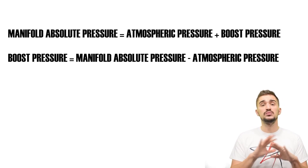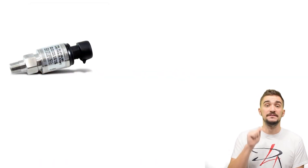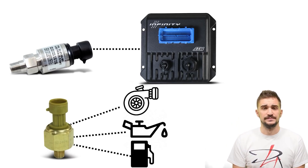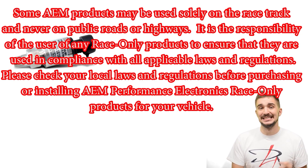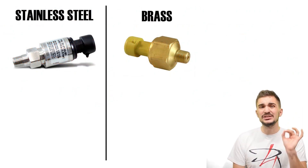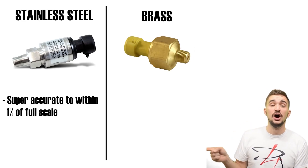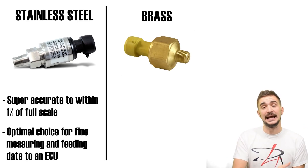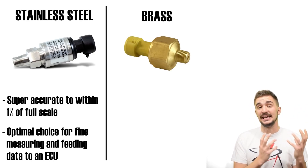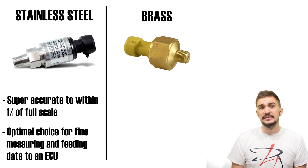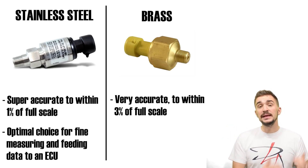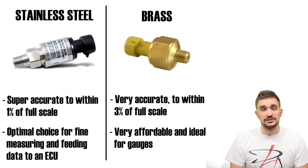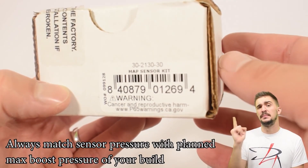AEM has a very broad range of sensors, both for measuring manifold absolute pressure and feeding this data to your ECU, as well as gauge sensors for measuring boost pressure, oil pressure, and fuel pressure. AEM also has pressure sensors in two different materials: stainless steel and brass. Stainless steel sensors are extremely accurate, with accuracy to within 1% of the full scale of the sensor, making them ideal for fine measurement and feeding data to your ECU. Brass sensors are accurate to within 3% of full scale — a bit more economical but still very accurate, suitable for gauge measurement applications. It's important to match the correct sensor with your planned maximum boost.